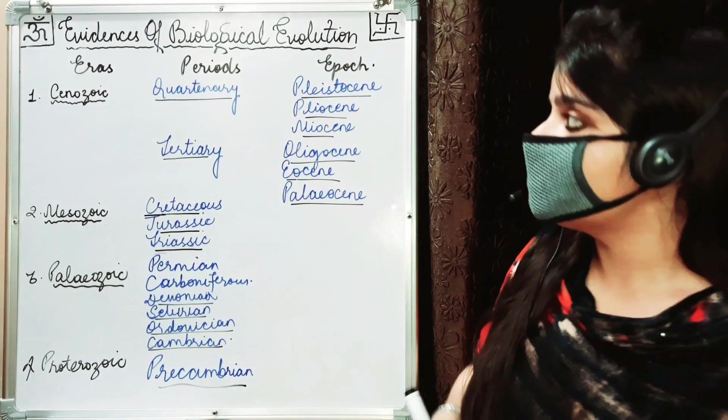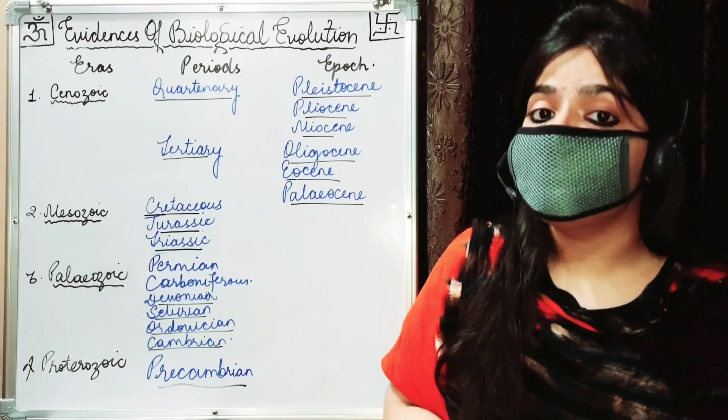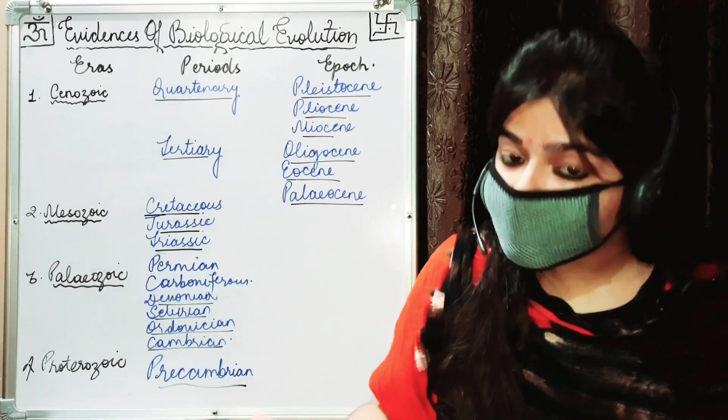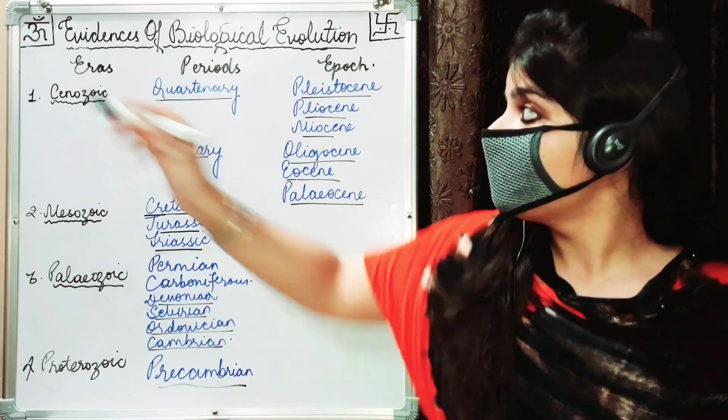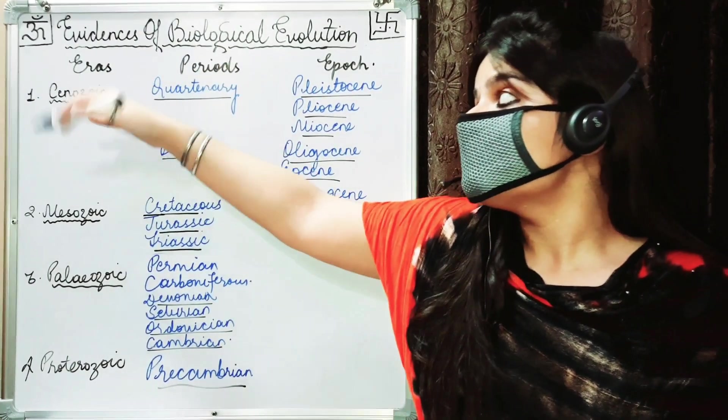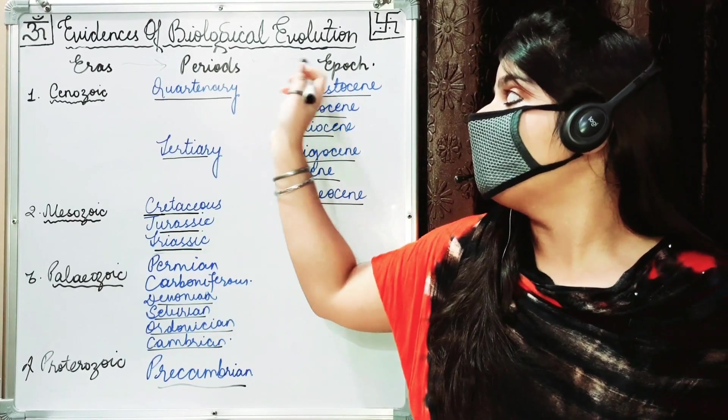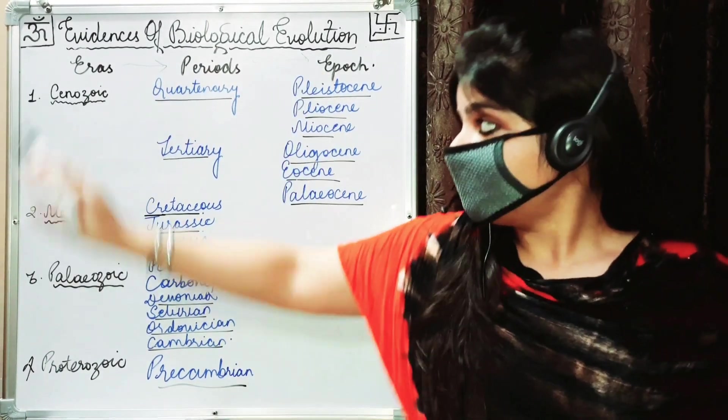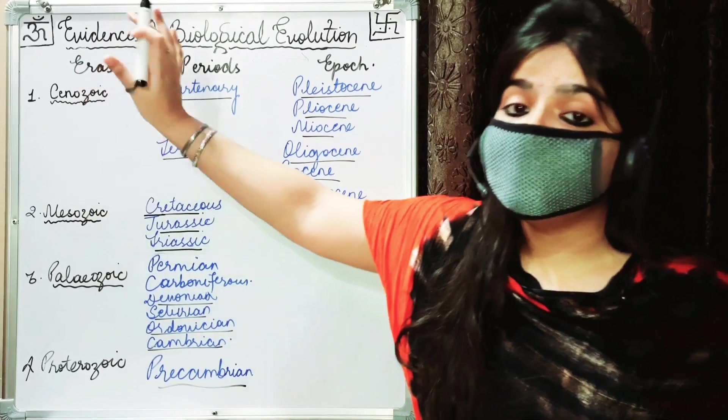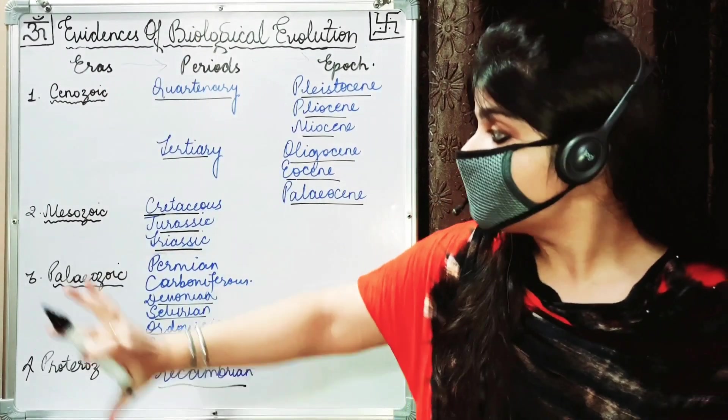So first of all, this concept is the Earth's history or geological time scale. It is divided into five eras, then eras are divided into several periods, and periods are divided into epochs.